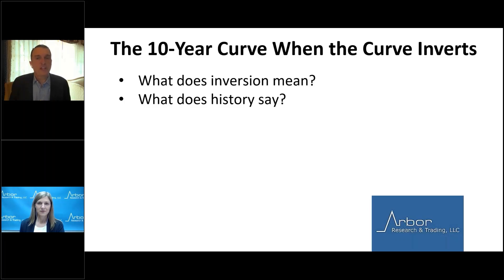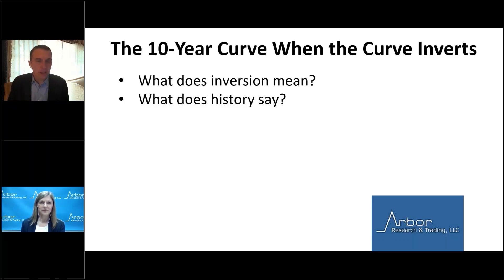I usually use the benchmark of 10 days in a row where the yield curve is negative. We might be resetting that 10-day clock today, April 5th, the day we're recording, because it's back positive again. A lot of the comments I'm going to make are predicated on the idea that the yield curve eventually goes inverted on a persistent basis — 10 consecutive days, if not longer — and what that means.